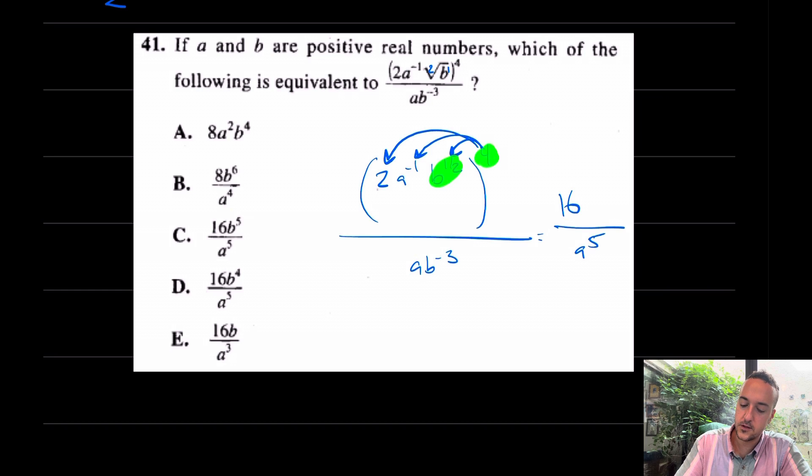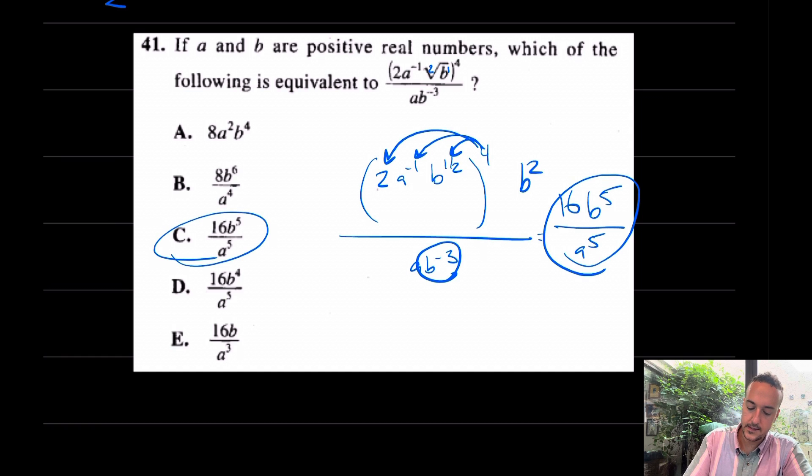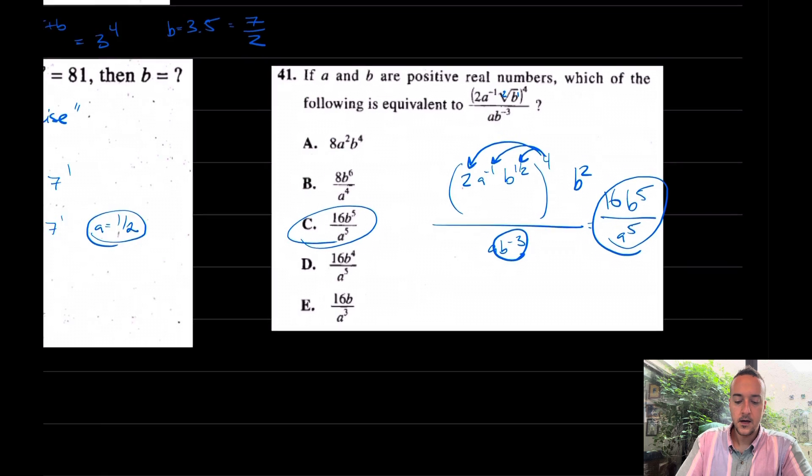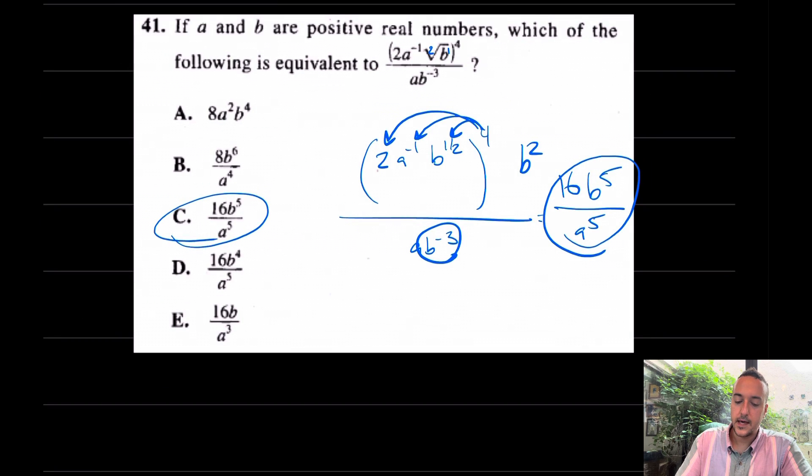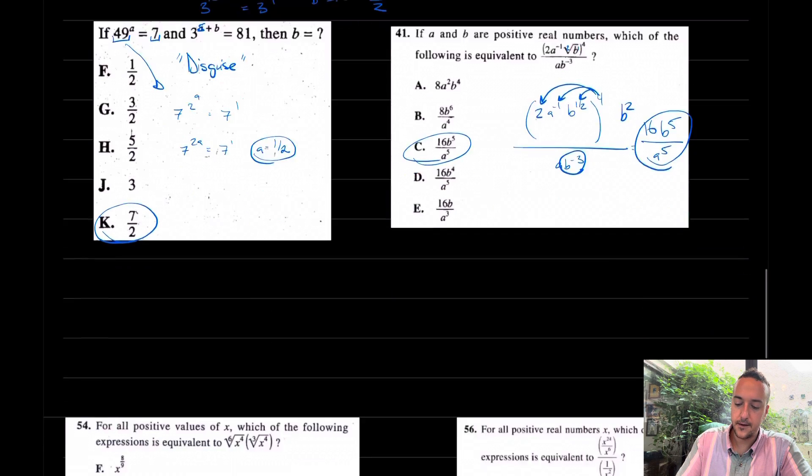What about over here? I have B to the 1 half to the 4th, really distributing to become B to the 2nd. I have B to the 2nd in the top. But where are these B's going to go? A negative exponent in the bottom will send these to the top, leaving me with B to the 5th on the top. I really like this answer choice, C here. Take a second and soak that in and ask any questions if you have them.